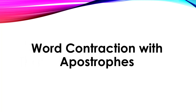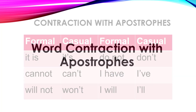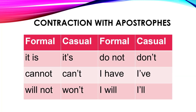What about contraction? This is the other use of apostrophes, just to double the confusion. Here I'm going to show you contraction in a table. Formal is to spell out it is; casual is to use the contraction with an apostrophe — it's. So you can say it is cold, or you can say it's cold.